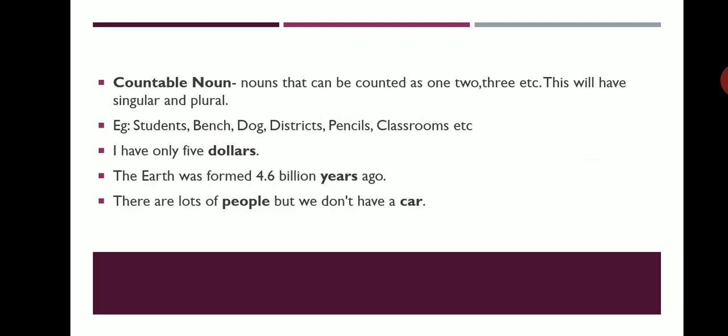Countable nouns are those which we can count — one, two, three, etc. They have singular and plural forms. Examples: student/students, bench/benches, dog/dogs, district/districts. 'I have only five dollars' — dollars is countable. 'The earth was formed 4.6 billion years ago' — years is countable. 'There are lots of people but we don't have a car' — both people and cars are countable nouns.